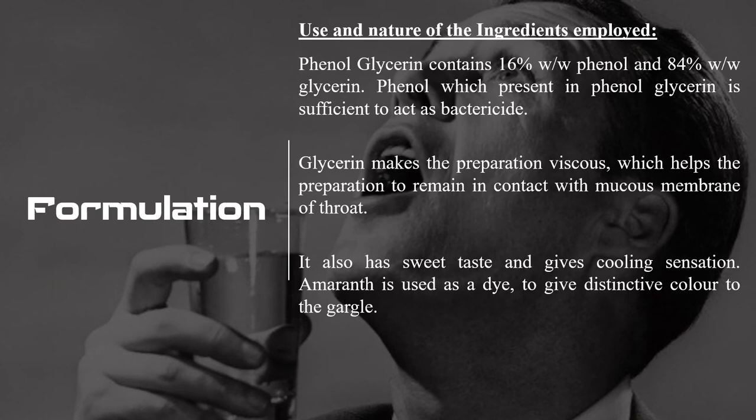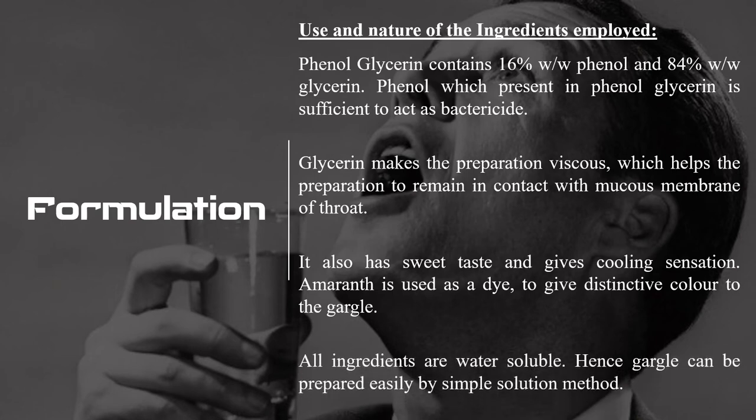Amaranth is used as a dye — it gives a distinctive color to the gargle. All ingredients present in phenol gargle BPC are water soluble. As they are water soluble, the gargle can be prepared easily by a method called the simple solution method. The method employed in gargle preparation is the simple solution method.